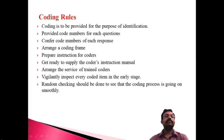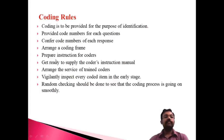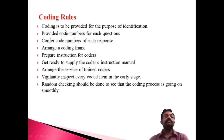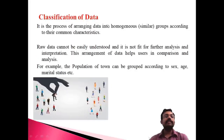The last rule is that random checking should be done to see that the coding process is going smoothly. Random checking is essential for completing these activities. So these are the important rules regarding coding: identification, code numbers for each question, code numbers for each response, coding frame, instructions for coders, instruction manual, trained coders, vigilant inspection, and random checking.